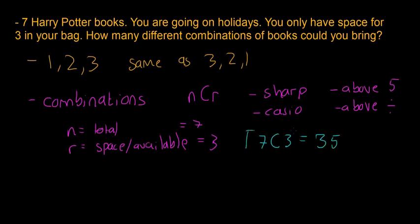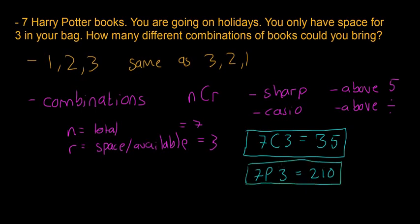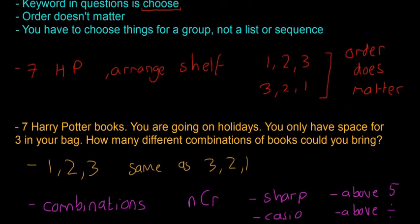If you remember from the last example, seven permutations three is 210. So choosing is always going to be a good bit smaller than the permutations. Hopefully that is clear - just the difference between the two.